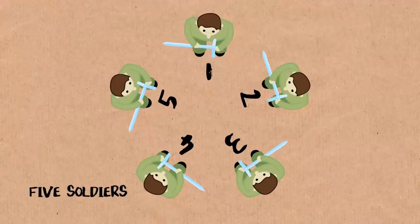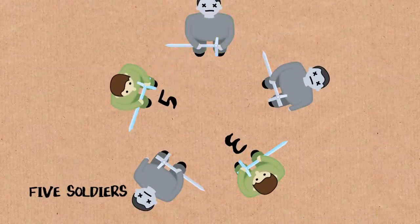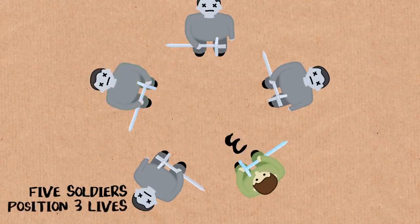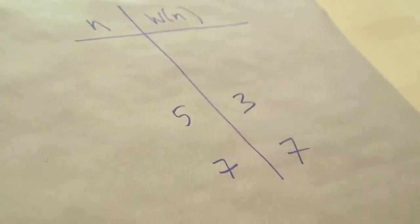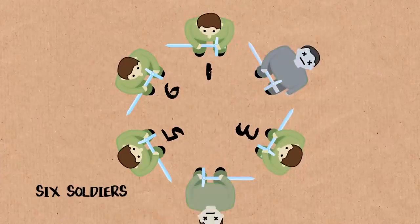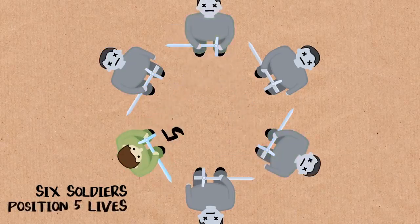And so what I would do is I'd start doing some other values. Why don't I do five? So one kills two, three kills four, five kills one, three kills five. The winner is three. I guess there was no reason for me to skip six. So why don't we fill in six? Kills two, three kills four, five kills six, one kills three, five kills one. The winner is five.